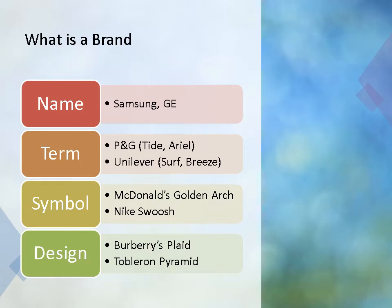A brand can also be a name — for example, Apple Computer, Sony, Samsung, General Electric. It can also be a term, like in the fast consumer goods industry: Procter & Gamble has Tide and Ariel in the detergent category, and Unilever competes with Surf and Breeze. There are also symbols, like McDonald's Golden Arch and Nike's Swoosh. And also design, like Burberry's Plaid and Toblerone's Pyramid. So it has many branding elements: name, term, symbol, and design.